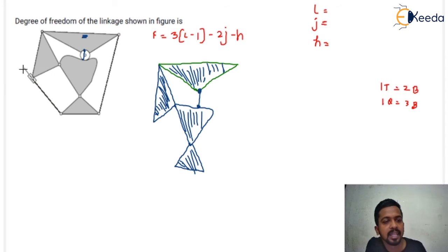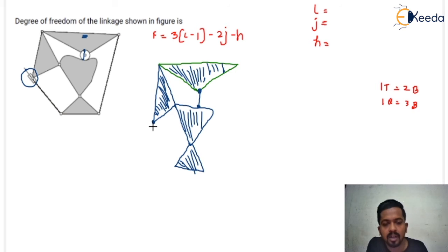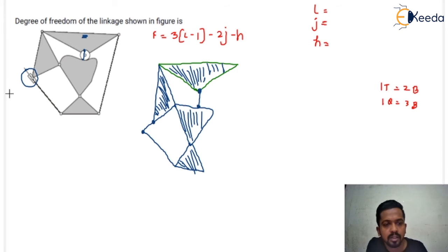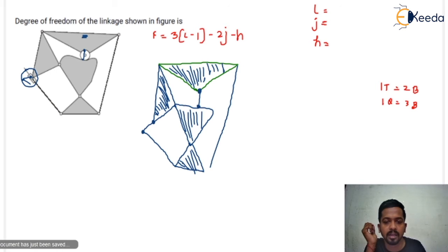Here you can see there is a slider. To convert the slider into simple form: the slider is connecting two links — that is one and that is another. So this slider can be converted like that. That is another link, and that is the final link that I am going to connect.